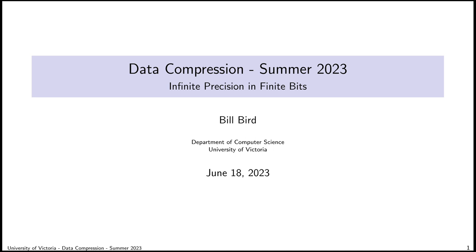Arithmetic coding sounds interesting and useful, but if our goal is to actually write a compression scheme as a computer program, we have a problem: arithmetic coding seems to rely on the properties of real numbers, which theoretically have an infinite number of decimal places. And the algorithm we developed in the last lecture relies heavily on being able to work with real numbers that have some arbitrary number of decimal places.